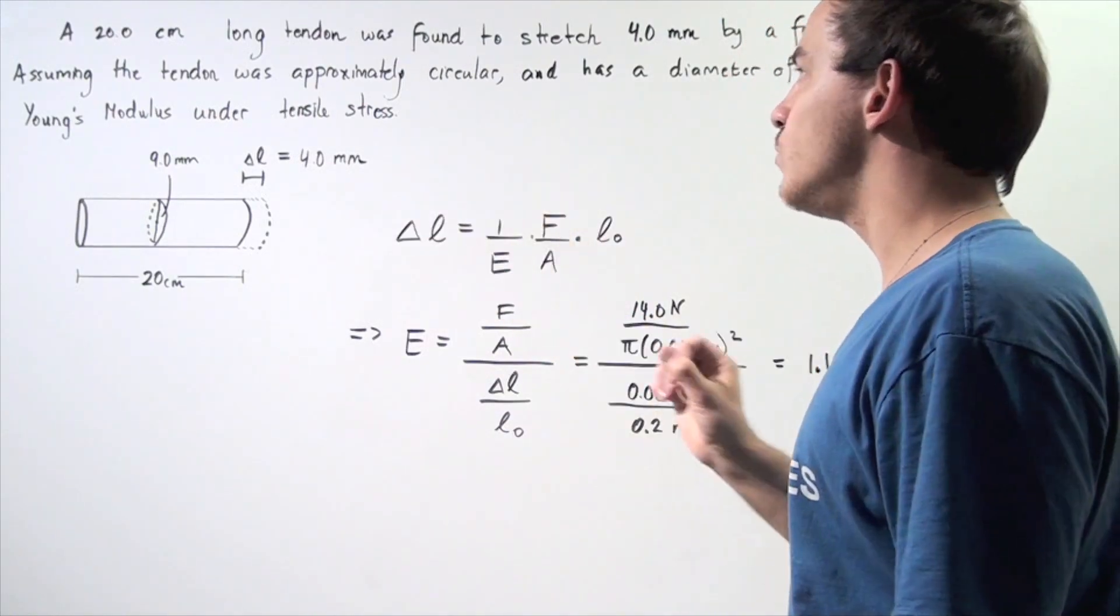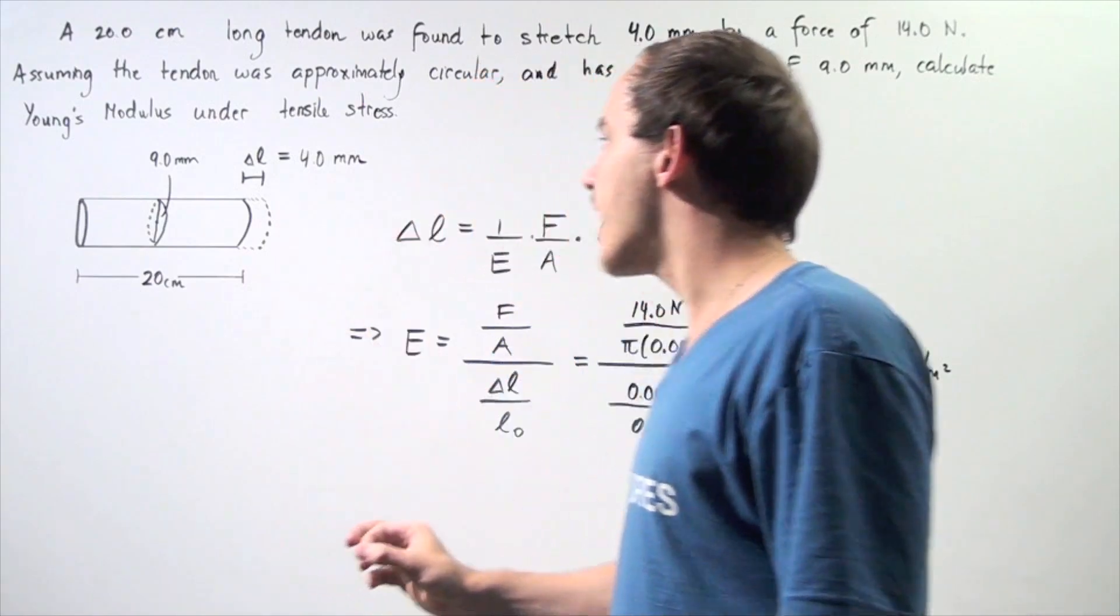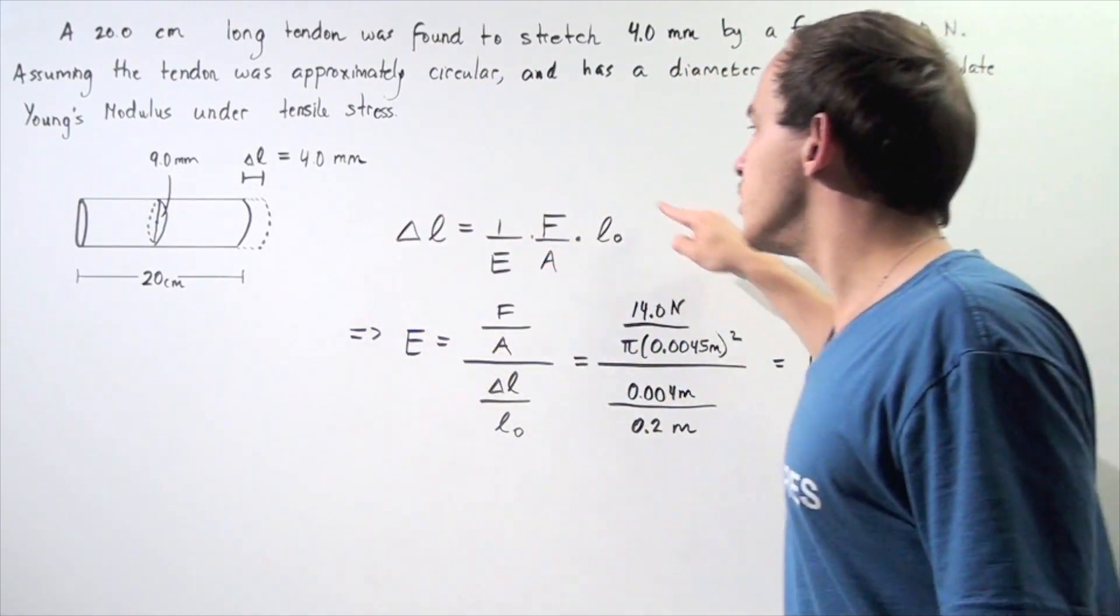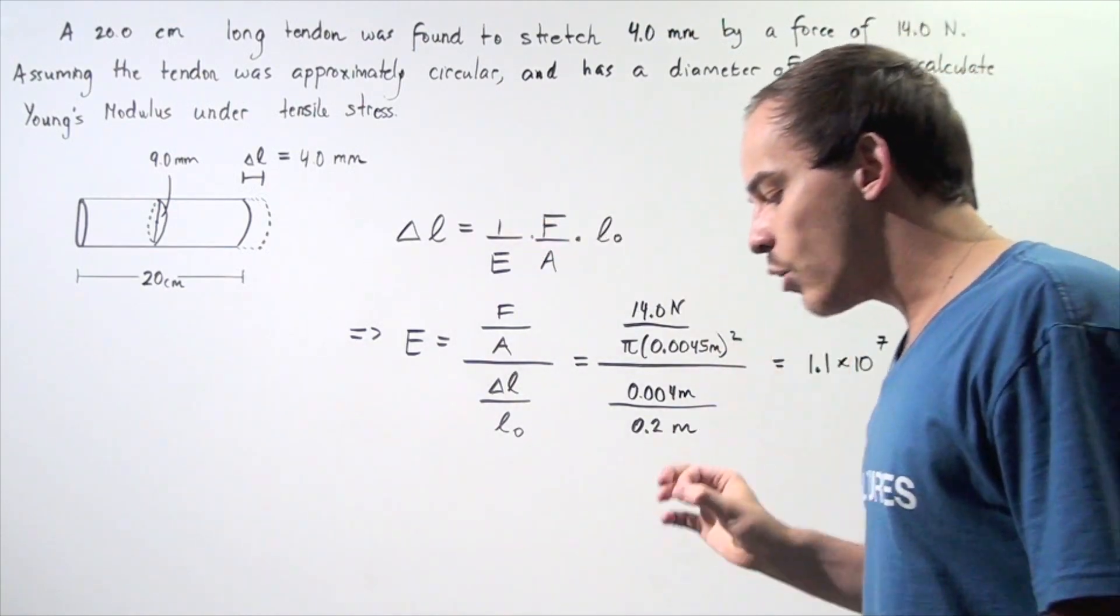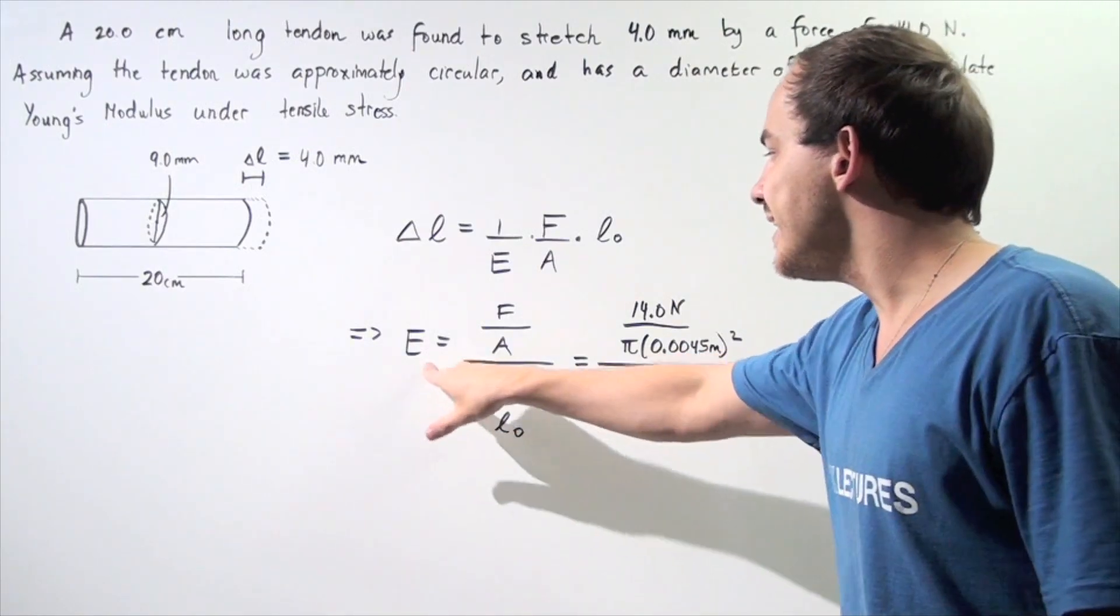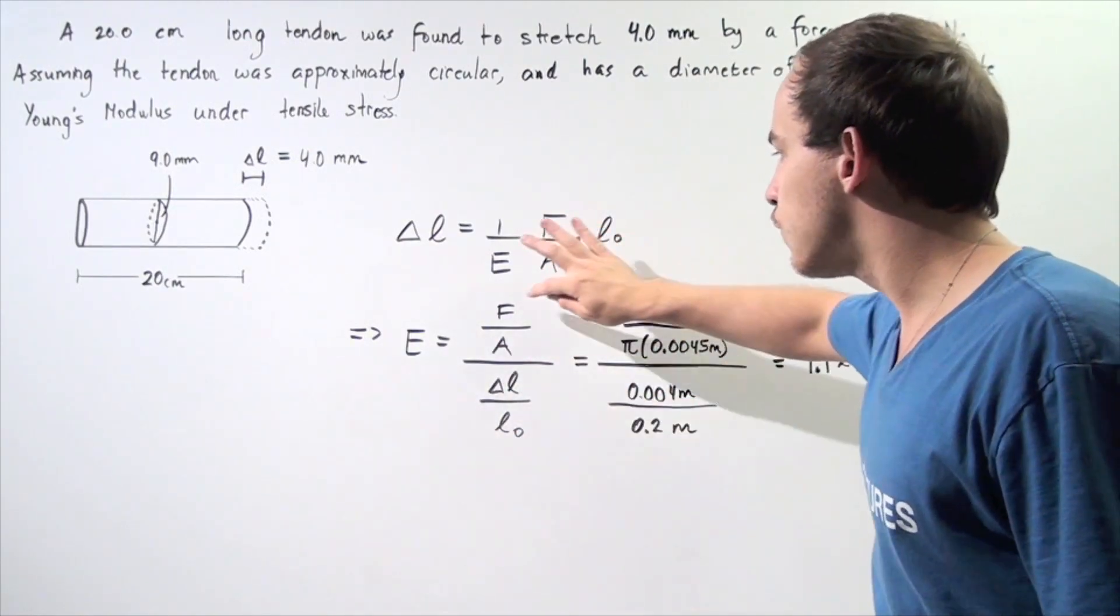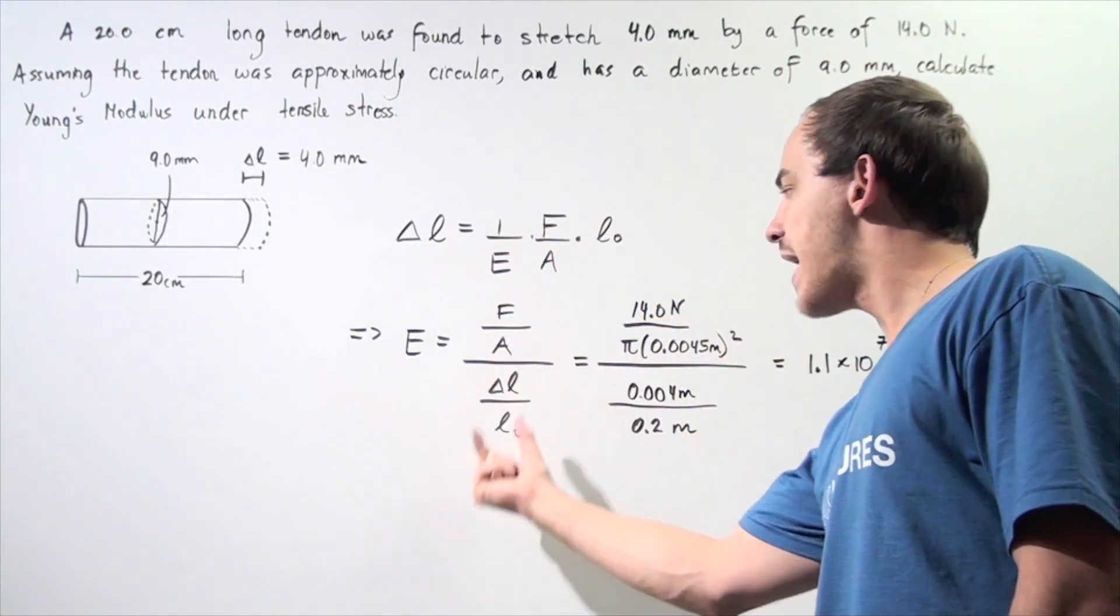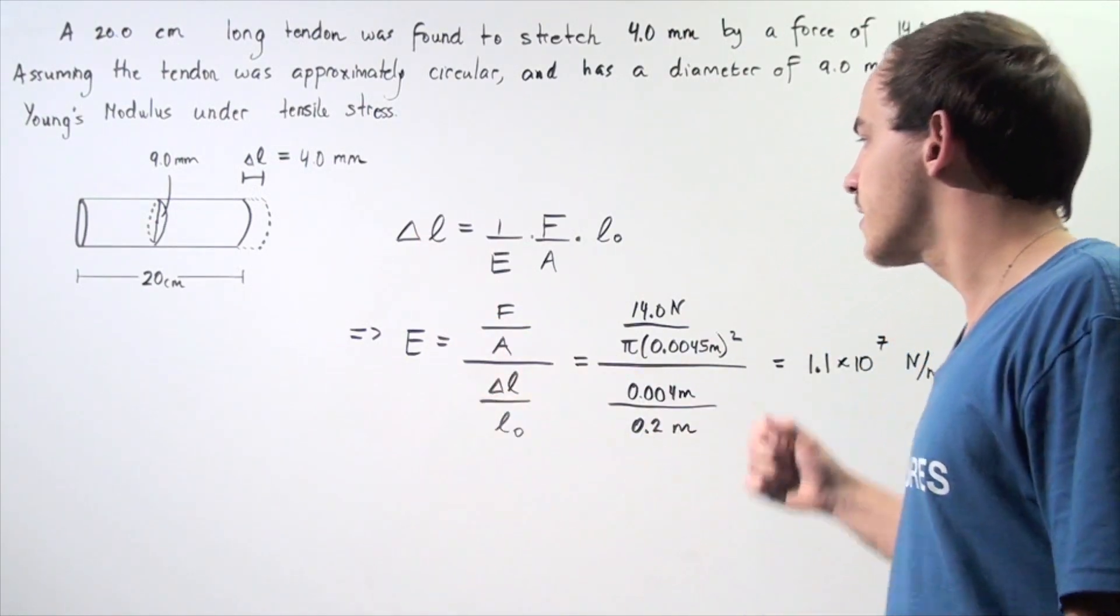Knowing that quantity, we want to calculate Young's modulus for tensile stress. We begin with this equation and rearrange, solving for E, where E is our Young's modulus for the tendon. So E is equal to stress over strain, so force per unit area divided by the ratio of our distances, the change in our distance, the elongation divided by the original length.